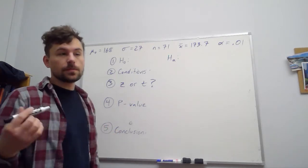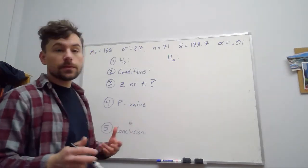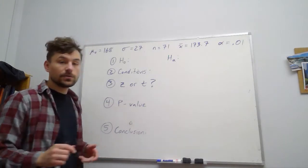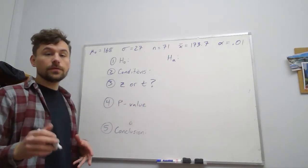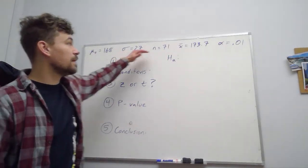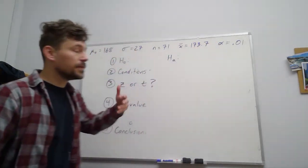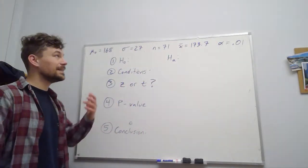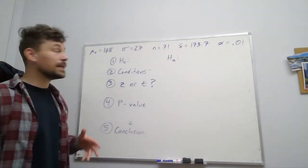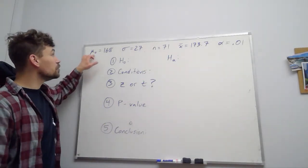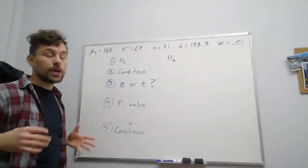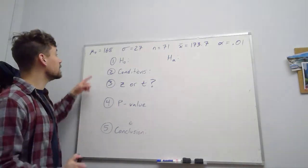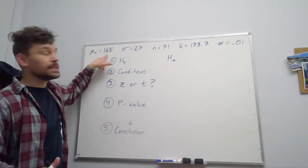So we laid out the basic conditions of what we found for the cholesterol levels of the women at a large university. So I just wrote those down up here, but that's your first step: go through the problem. Anything that's not labeled, figure out what it is. So we were told μ₀, meaning the general population mean, was 168.